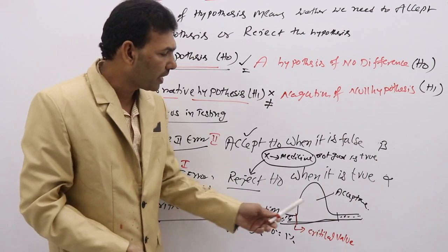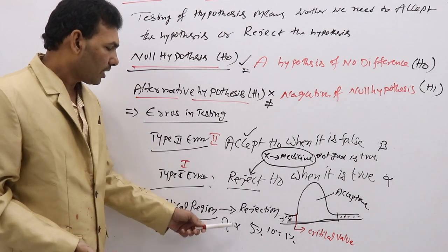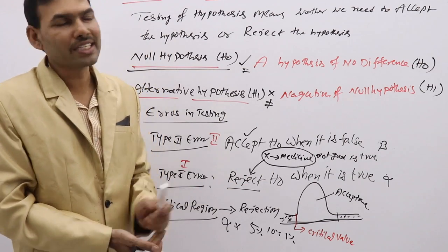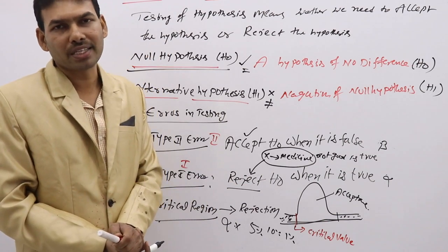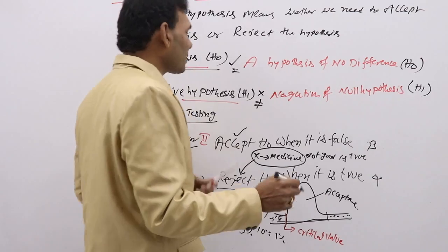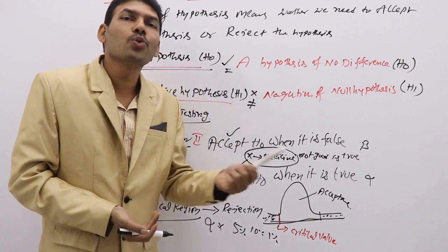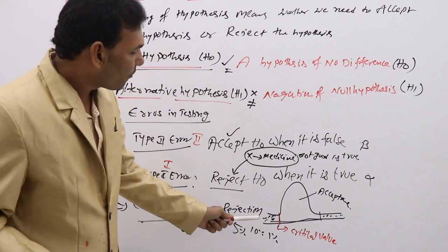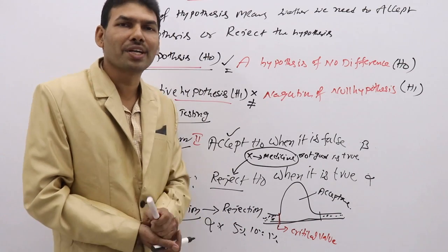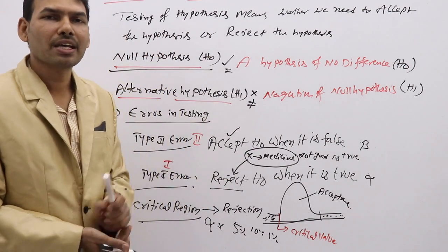Rejection 5% means acceptance 95%. We represent that one with alpha, and 1 minus alpha into 100% is the confidence limit — that is 95%, 98%, 99%. In testing we have two types: one-tail test and two-tail test. If the rejection region is on both sides, we call that a two-tail test. If the rejection region is on one side, we call that a one-tail test.